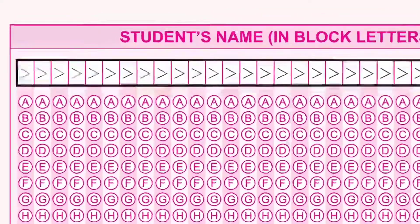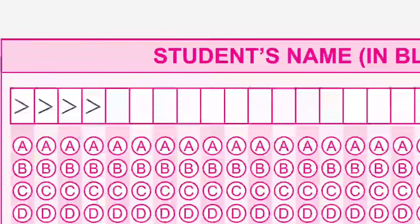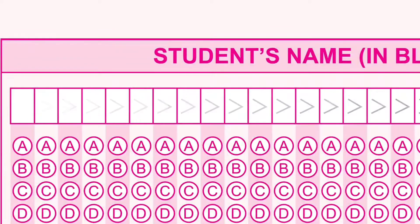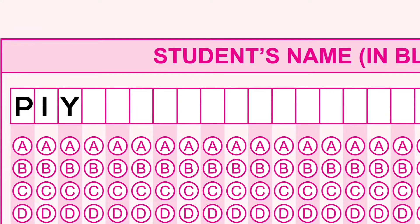My name is Pius Raj. We will use the name box and fill it in space by space. We will write the name starting from 'Raj', filling each letter into the corresponding box.